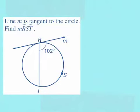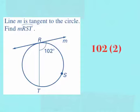An example of this theorem: line M is tangent to the circle, and it asks us to find the measure of arc RST. RT is a chord on my circle, and it is intersecting the tangent line M on the circle. They tell us that angle R is 102 degrees, and they ask us to find arc RST, which is intercepted by that angle. To find the measure of the arc, I take my angle measure of 102 and multiply by 2, giving me arc RST equals 204 degrees.